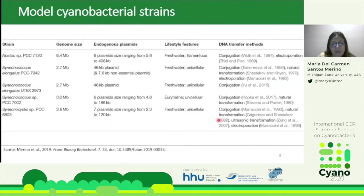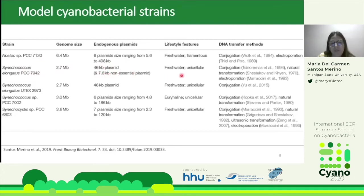In second place, we have Synechococcus elongatus PCC 7942, which also has a small genome containing normally one plasmid. This freshwater unicellular organism can be transformed by conjugation, natural transformation, or electroporation.